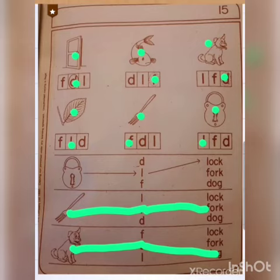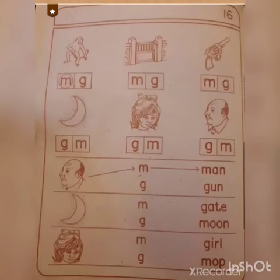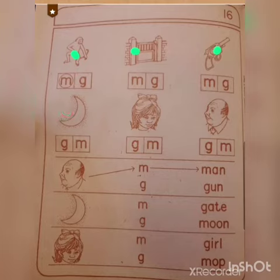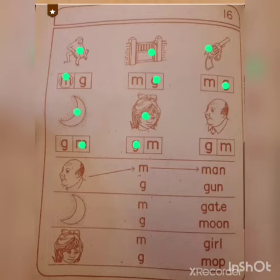Now let's jump to page number 16. It is the same activity — they have given you six pictures and you have to circle the correct alphabet of the picture and its first letter. Like M for monkey, the gate, the gun, the moon, the girl, and M for man.